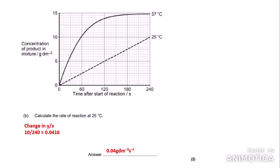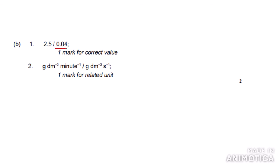I've worked out the units from the graph: grams per decimetre cubed per second. The units for concentration of product are grams per decimetre cubed, and the units for time are seconds. Since we are dividing change in y over change in x, the rate units are grams per decimetre cubed per second. So our answer is 0.04 grams per decimetre cubed per second, and we get both marks for the question.